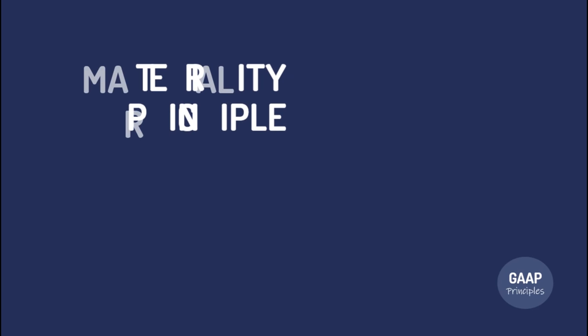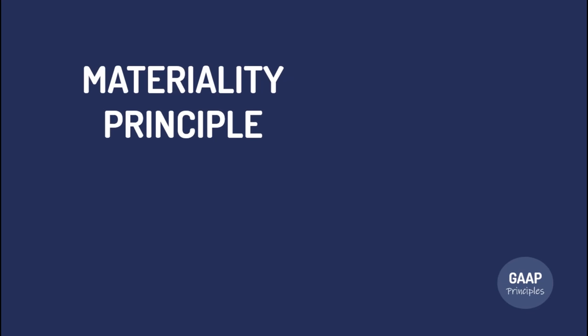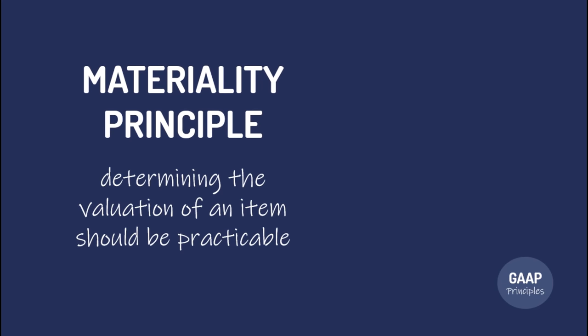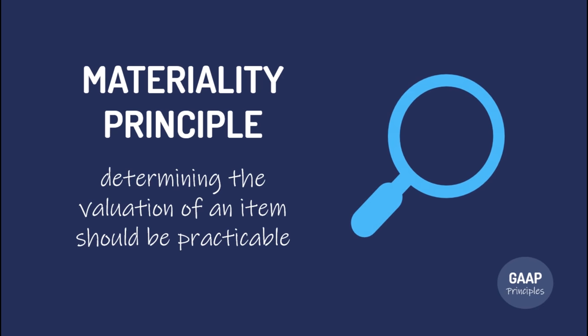Third, the Materiality Principle. This means that determining the valuation of an item should be practicable. For example, if you were to list assets, you will not be reporting staplers separately the same way as land, building, and equipment, because of the materiality of the amount. Land, building, and equipment would cost millions, while staplers would only cost around $100.